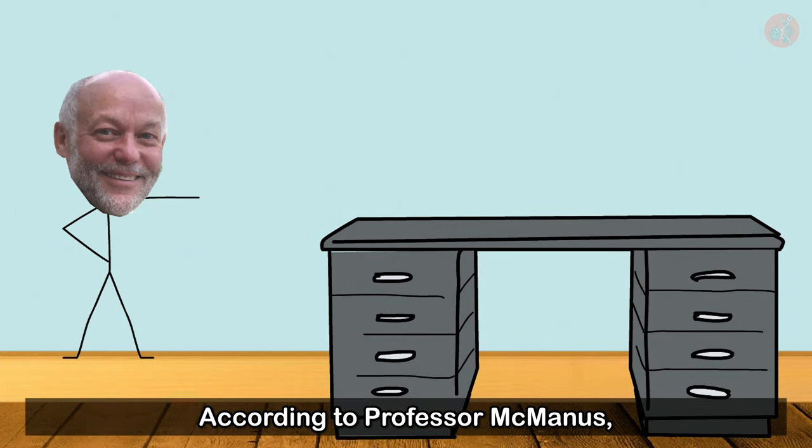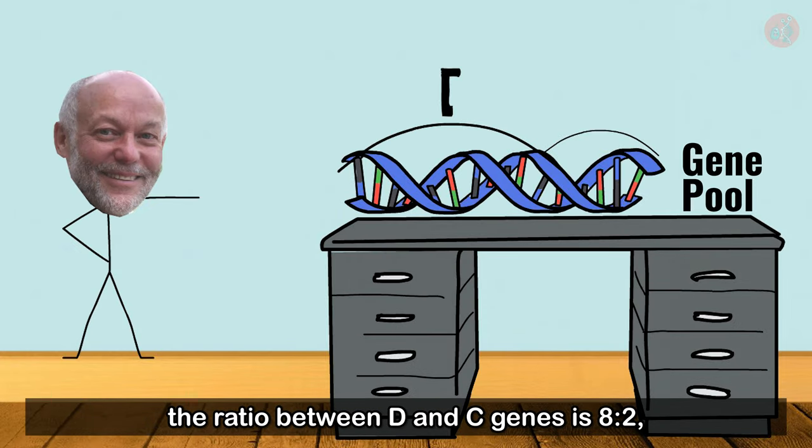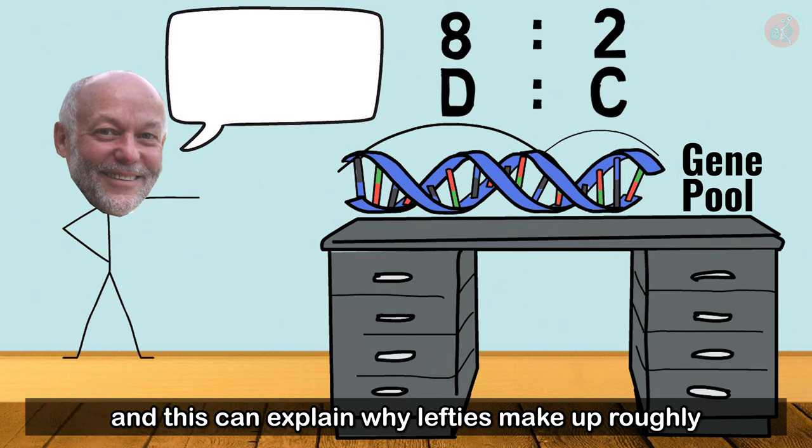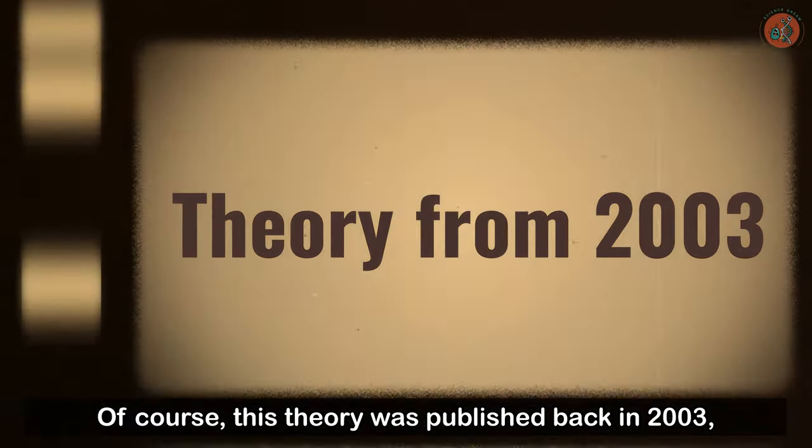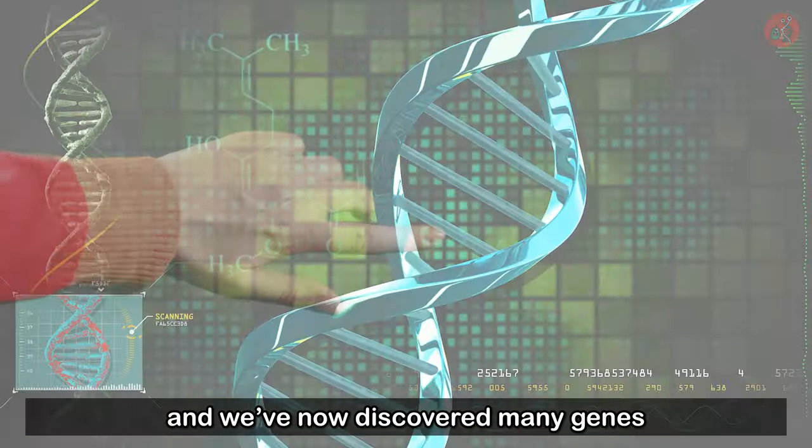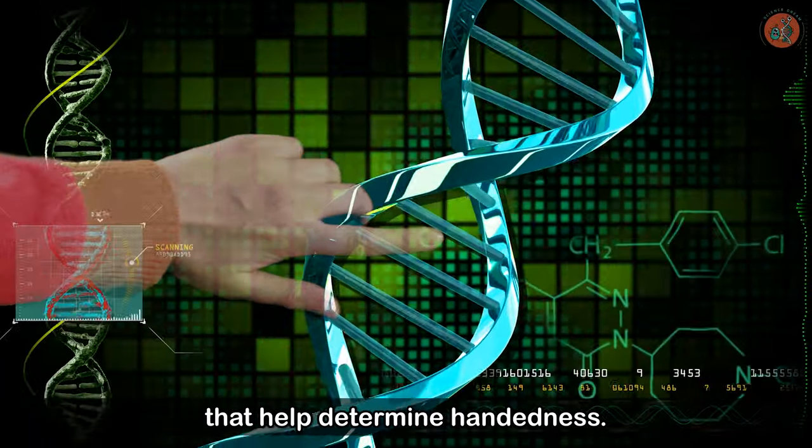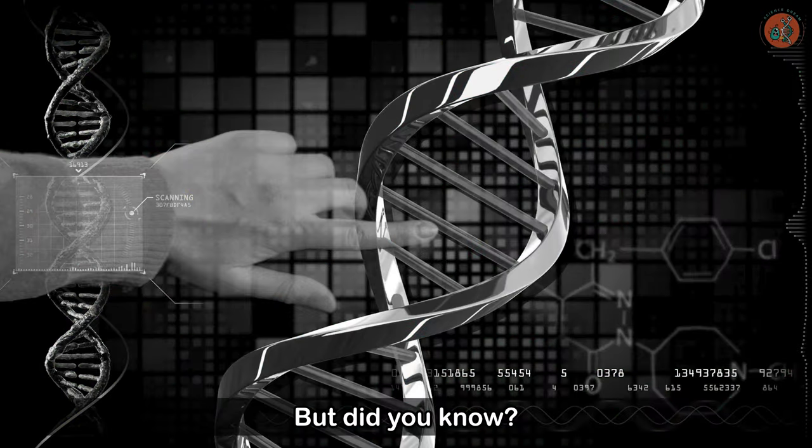According to Professor McManus, the ratio between D and C genes is 8 to 2, and this can explain why lefties make up roughly 10% of the world population. Of course, this theory was published back in 2003, and we've now discovered many genes that help determine handedness. But did you know?